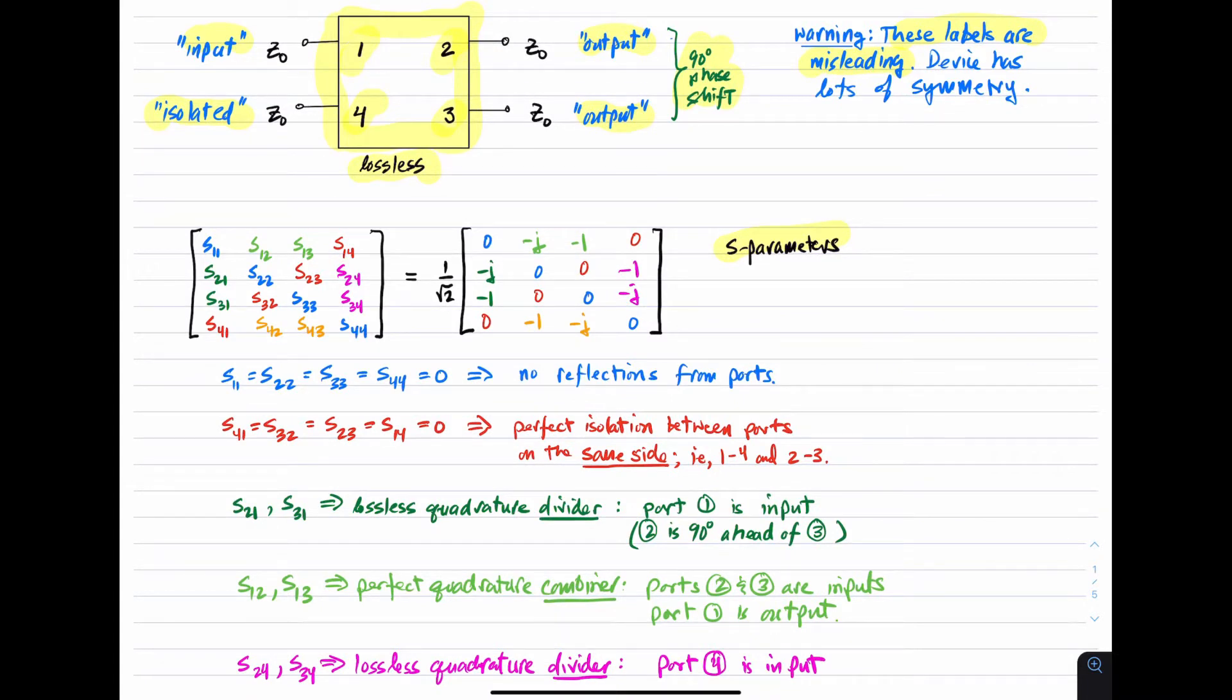I've color-coded these to facilitate an easier-to-follow explanation. So first, let's consider S11, S22, S33, and S44. Remember, those are just the voltage reflection coefficients at each one of the ports. Well, for quadrature hybrid, they are all zero, which means no reflections from the ports.